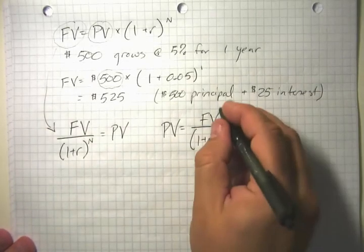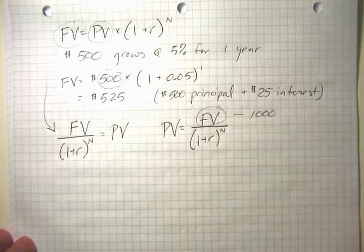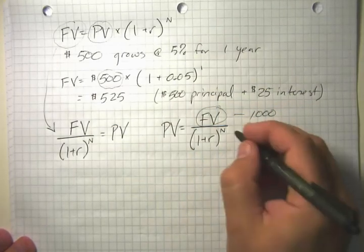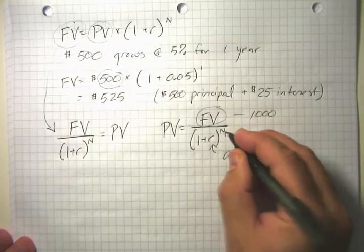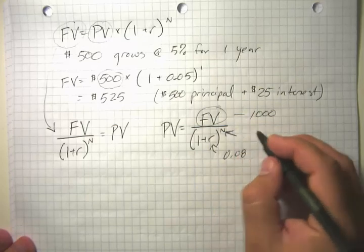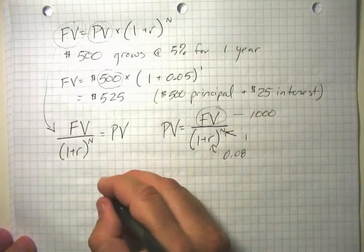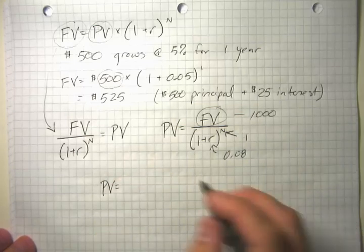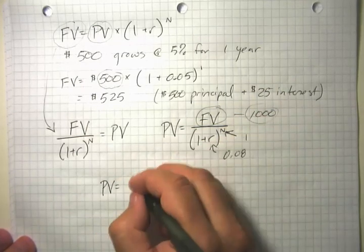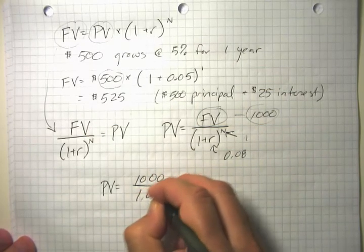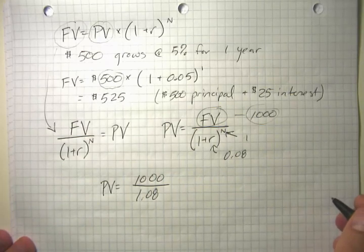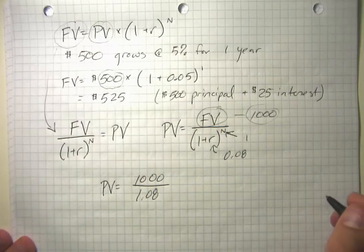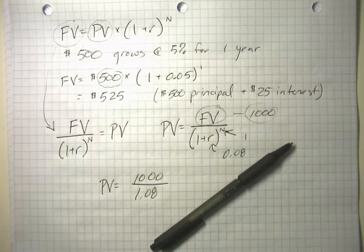In this case, we know the future value—we'll be repaid $1,000. The interest rate is 8%, and the number of years is 1. So the present value of our $1,000 bond is $1,000 divided by 1.08. You can calculate that on a calculator as a test, or pause the video. I'm going to switch over to Excel and do that.